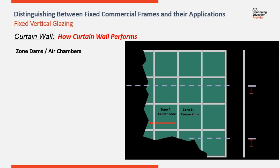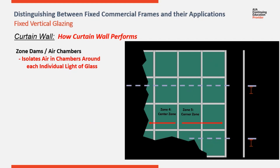Curtain wall performance is driven by pressure equalization. To achieve this, zone dams are inserted in all joints to isolate each light of glass. Zone dams or joint plugs create zones or chambers of air around each light of glass and prevent air or water from moving from one light of glass to the other adjacent to it.